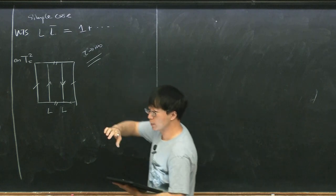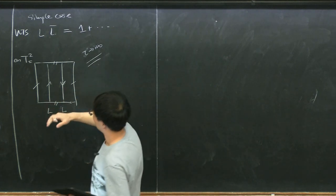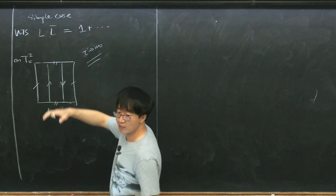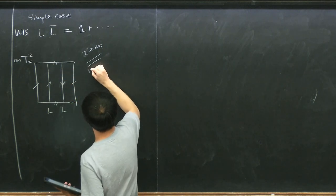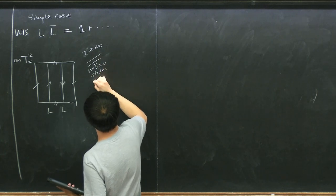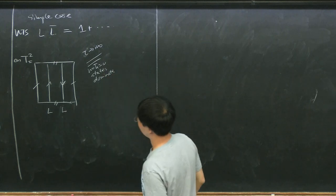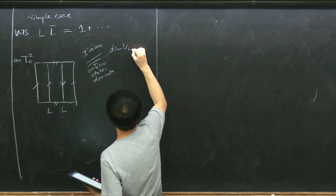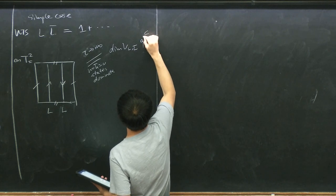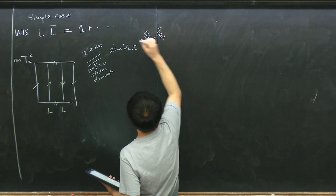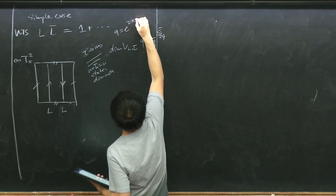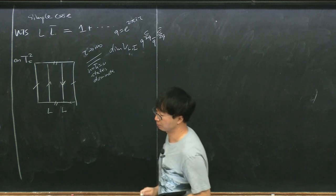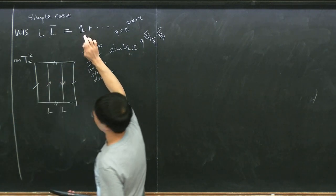In this limit, the torus partition function projects onto the vacuum — only H = H-bar = 0 states dominate — and quantizing on the circle, this picks out precisely the contribution from the junction vector space, multiplied by a divergent factor that depends on the central charge. Q equals e^(2πiτ) as usual. So this quantity shows up, which we want to relate to the fusion coefficient.